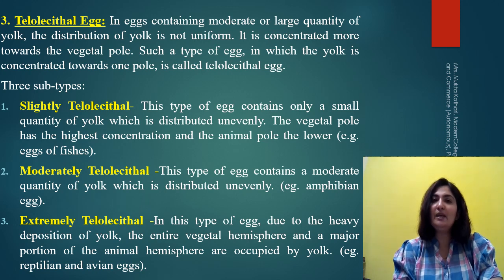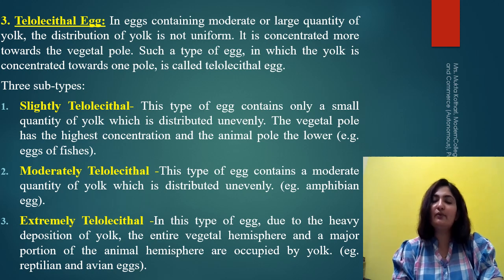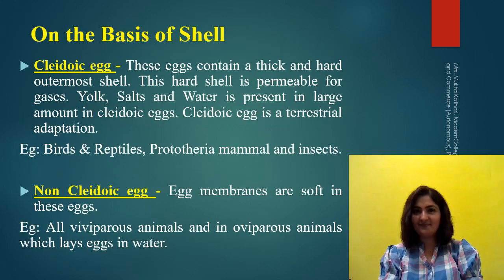Because of this, whatever small amount of cytoplasm is there will be pushed towards the animal pole, so it will appear as just a disc of cytoplasm. These type of eggs will be known as extremely telolecithal eggs. The example is reptilian or avian eggs.